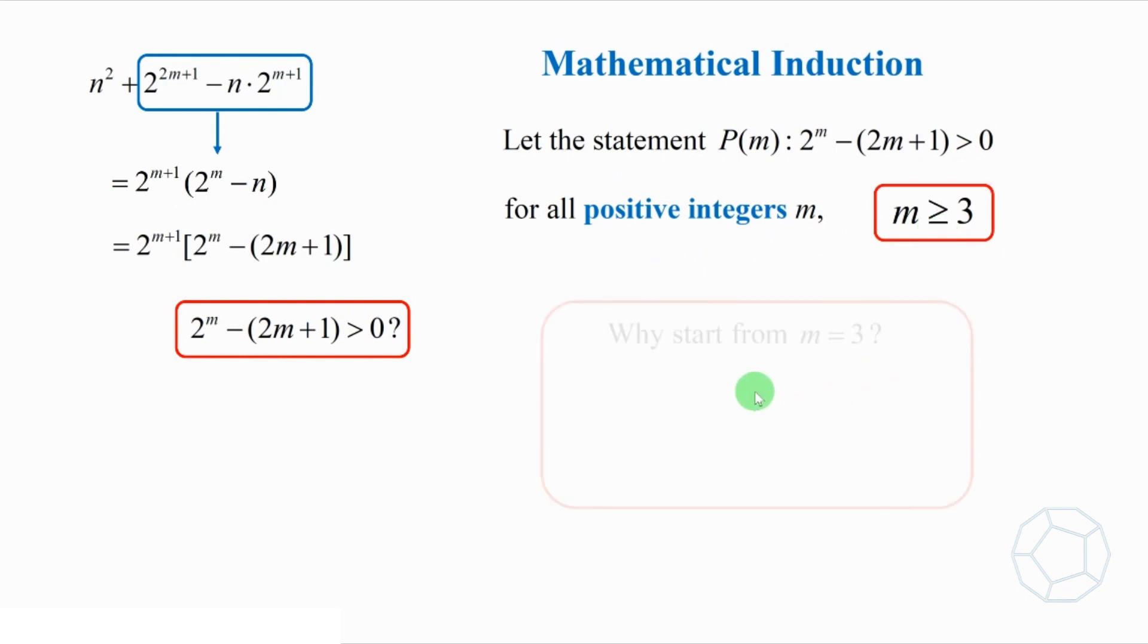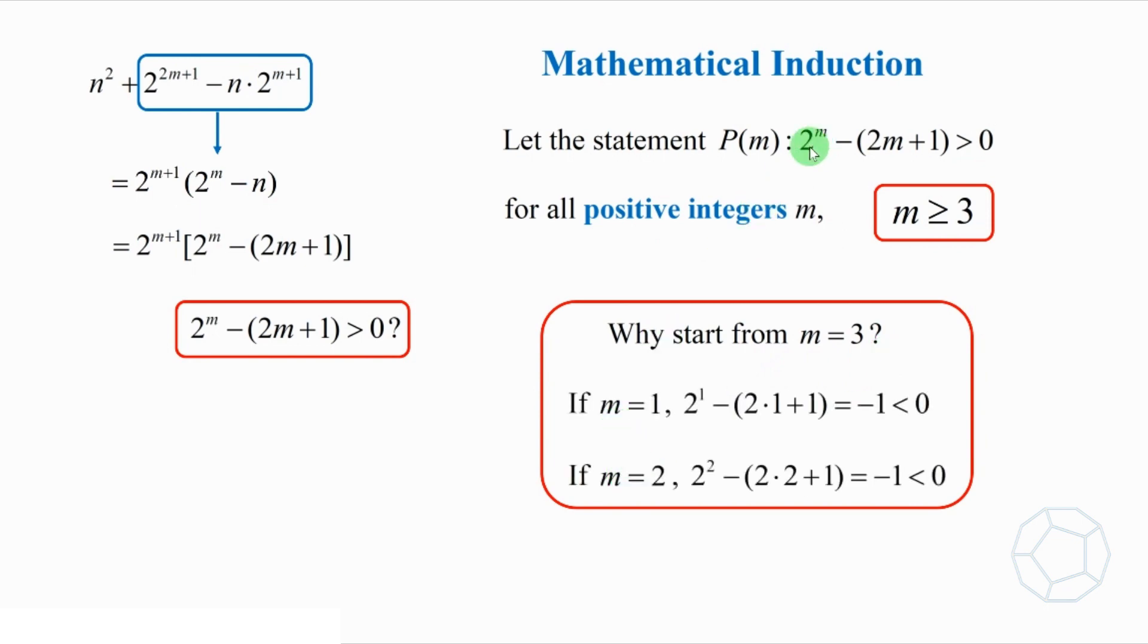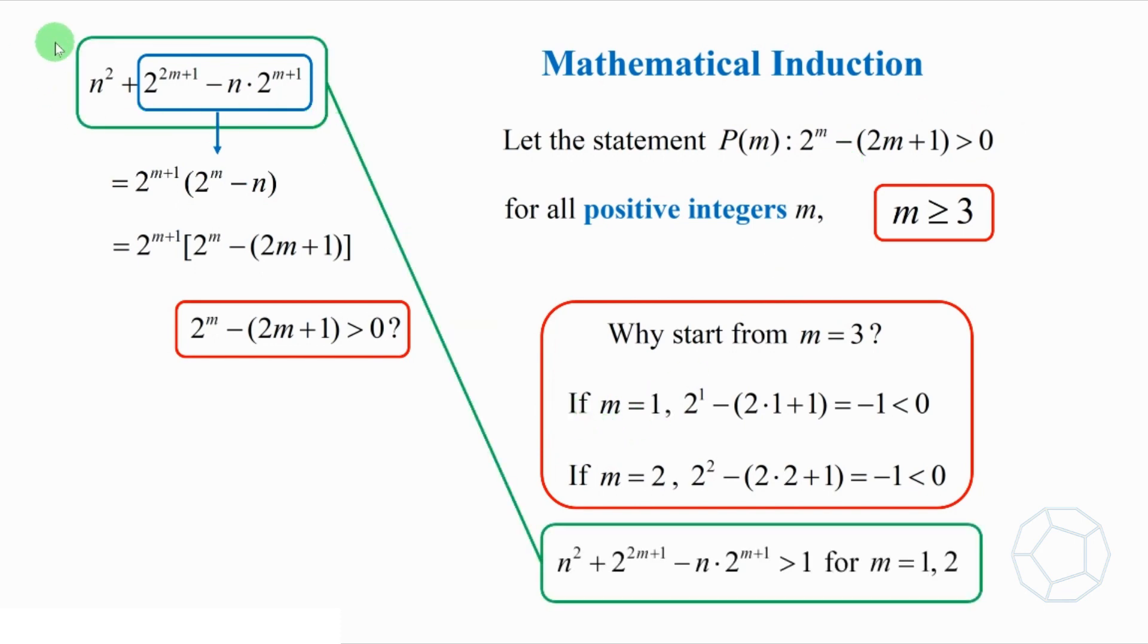You may wonder why we start from m equals 3. Because if you put m equals 1 and 2, then 2 to the power of m minus bracket 2m plus 1 equals negative 1, which is less than 0. The statement is unfortunately incorrect. It's the third tricky part. But it doesn't matter. We have already proved that the whole term n squared plus 2 to the power of 2m plus 1 minus n times 2 to the power of m plus 1 is larger than 1 for these two values of m.